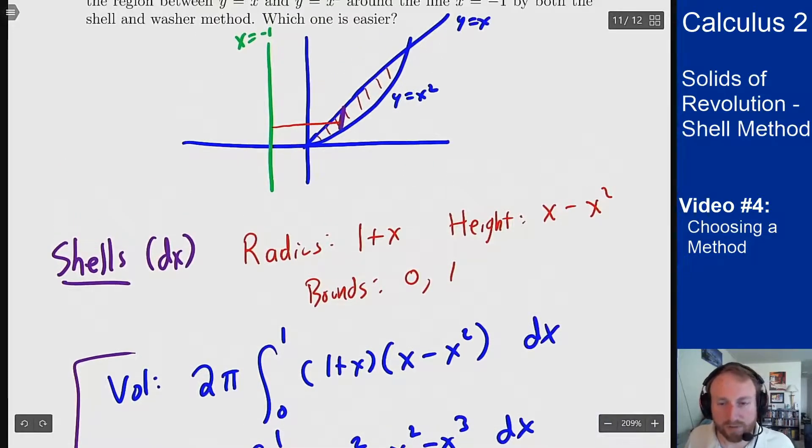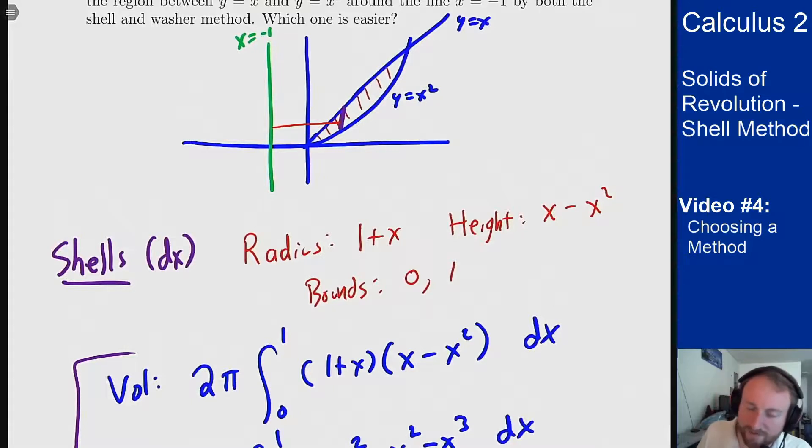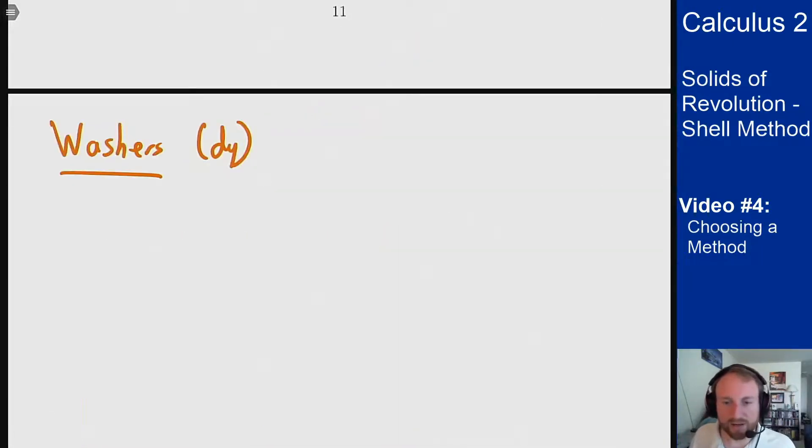Now if we want to solve the same problem with the washer method we're going to have to rotate a horizontal segment around this line and it's going to involve a dy integral. So there is our segment that's going to involve a dy integral here. So we're going to need our inner and outer radius and then our bounds of integration.